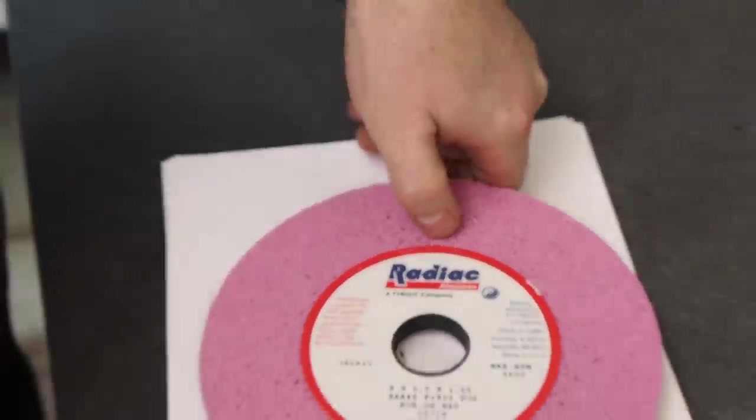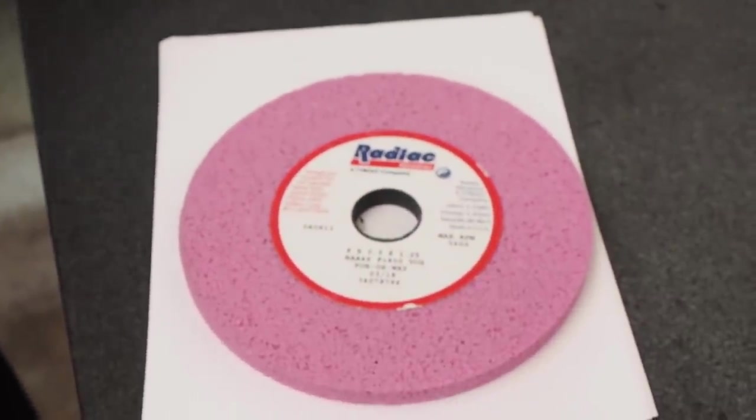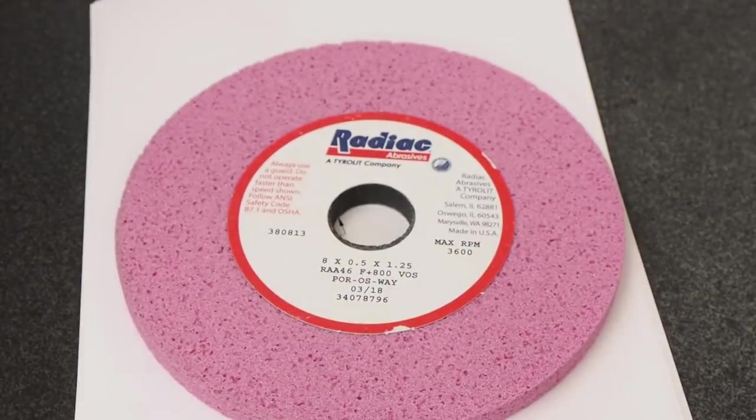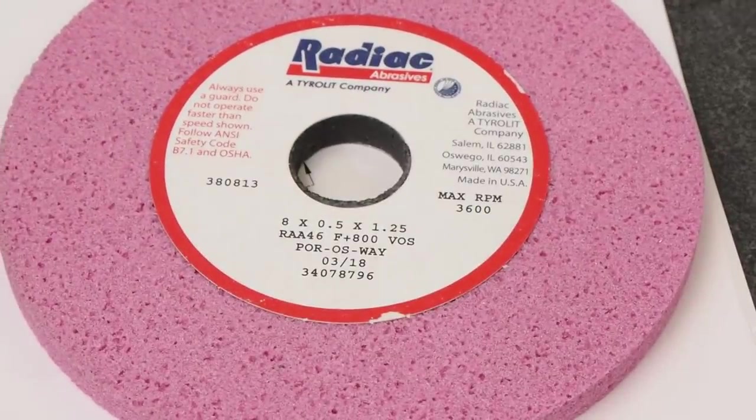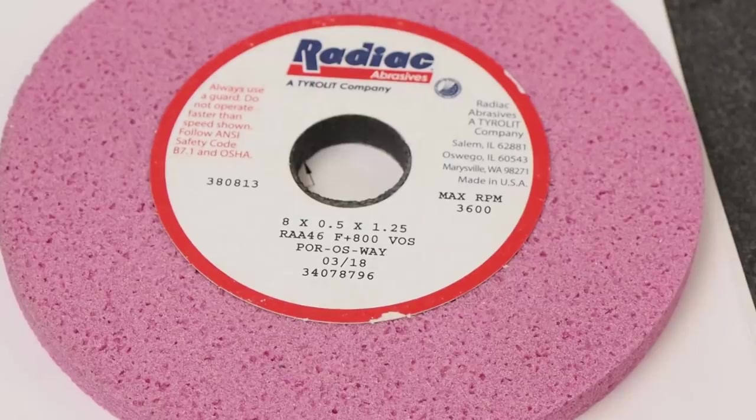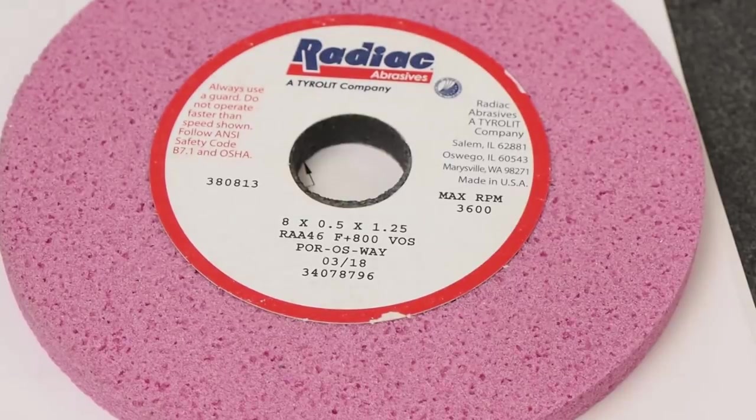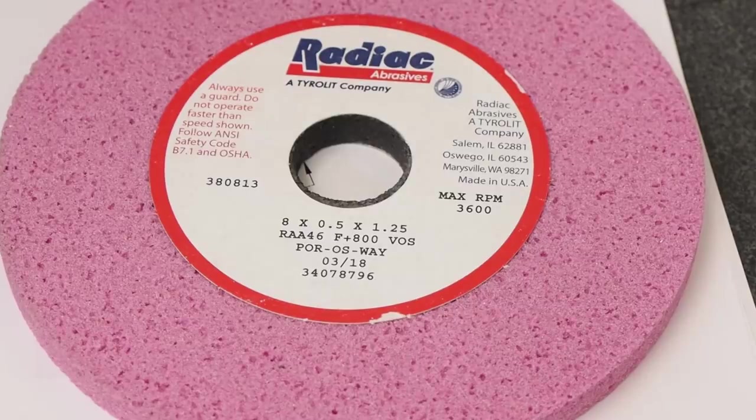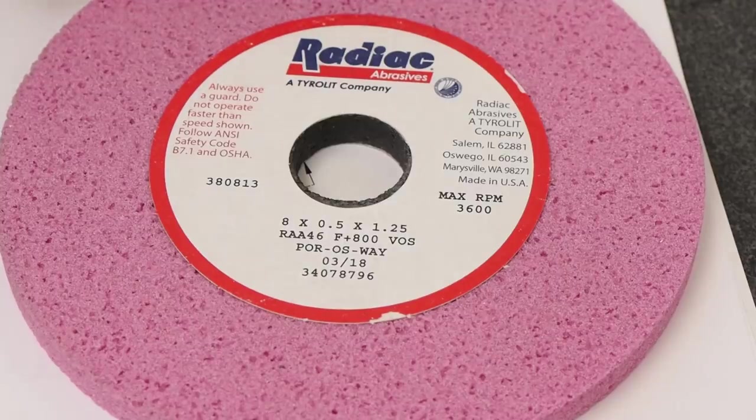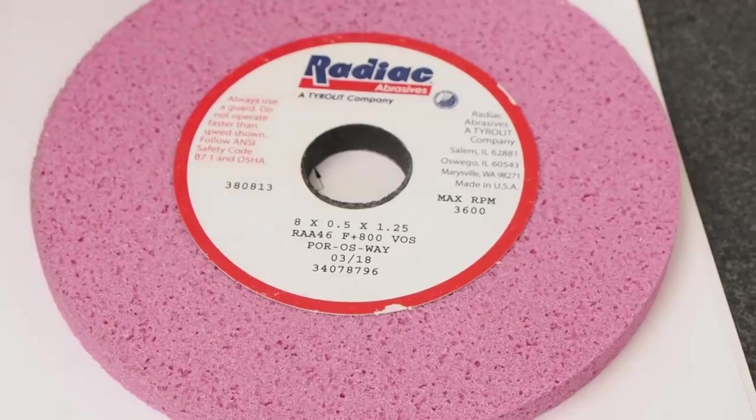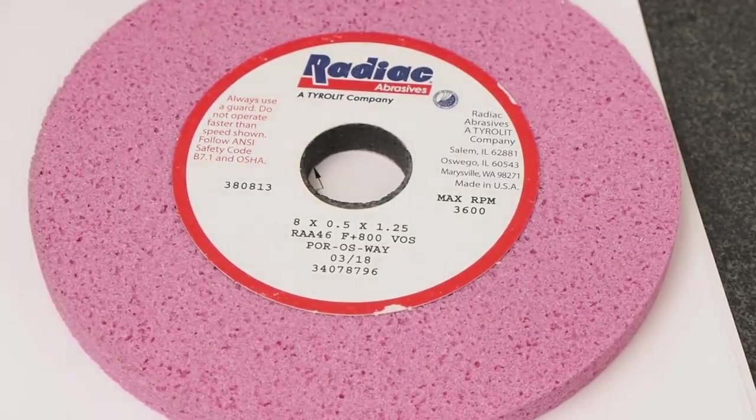If anybody's been ordering Radiac wheels, you've been finding out, and I guess this is true just about any wheels. I was talking with a guy from Norton and he says they're having problems too. The aluminum oxide grit, if I remember right that's coming from China, is getting hard to get right now. The wheels that I really love have been backordered all the way into February.